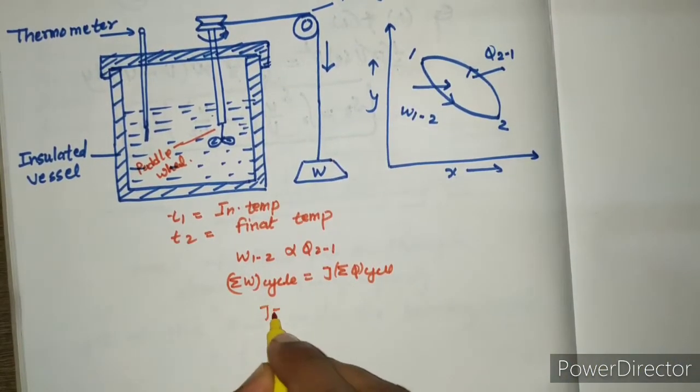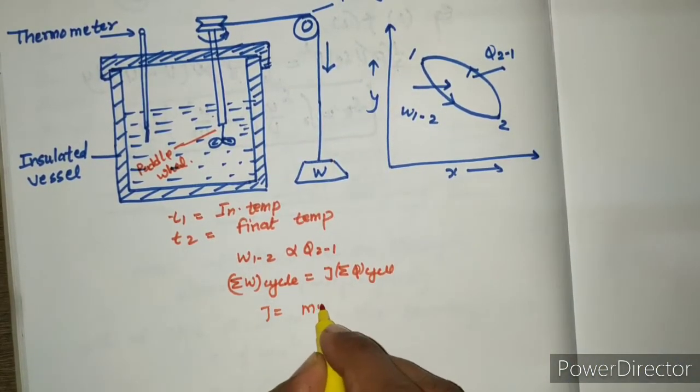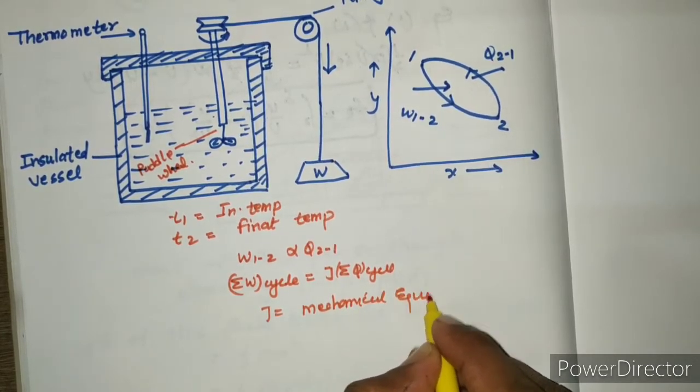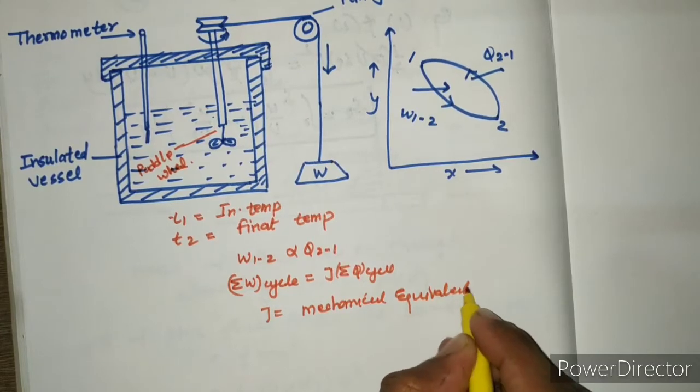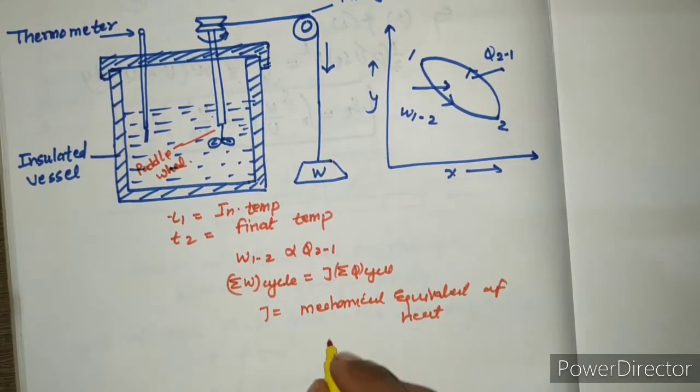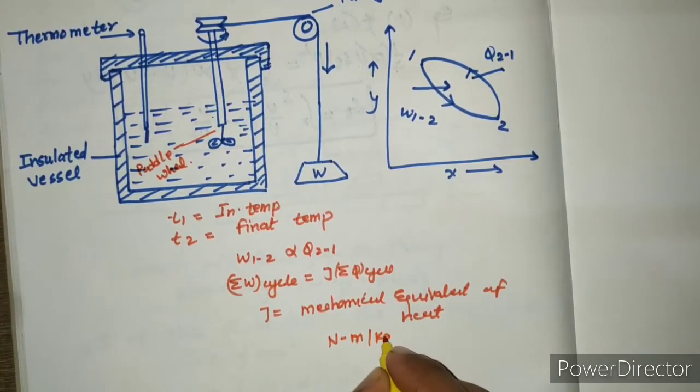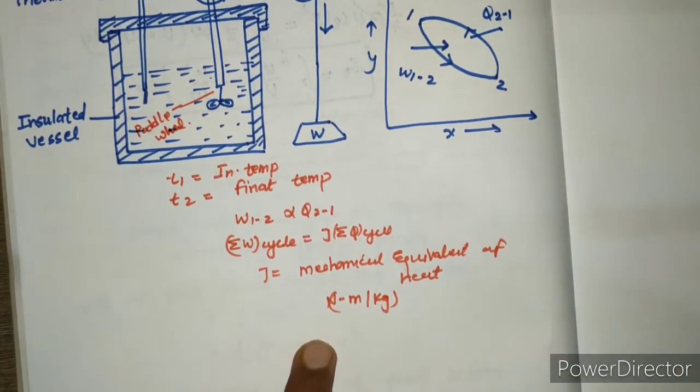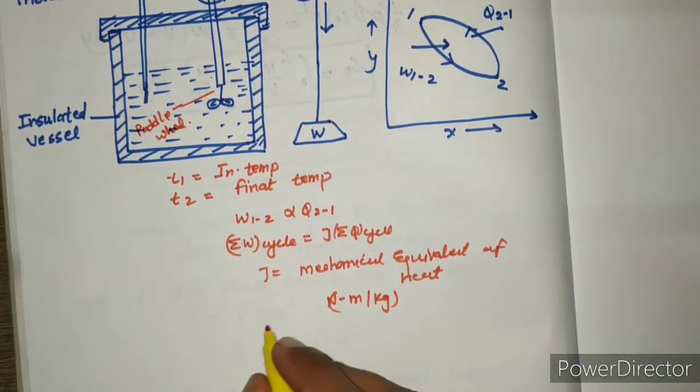J is called the mechanical equivalent of heat and this unit is Newton meter per kilogram.